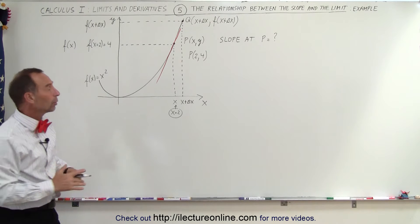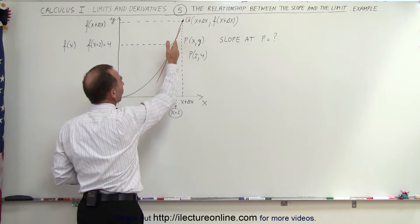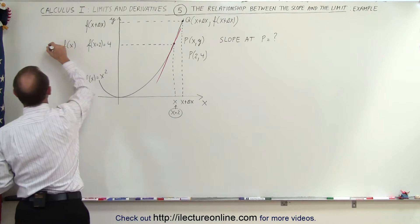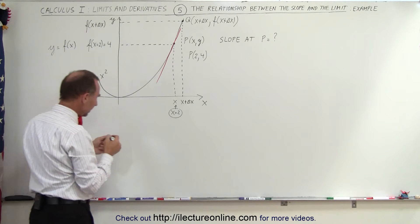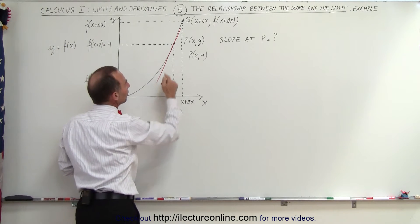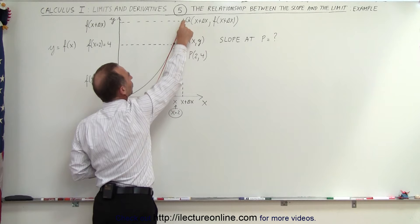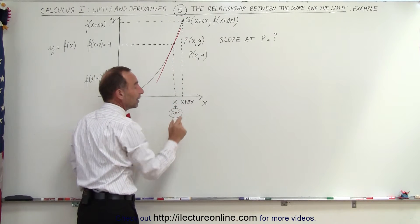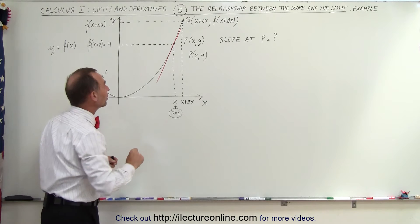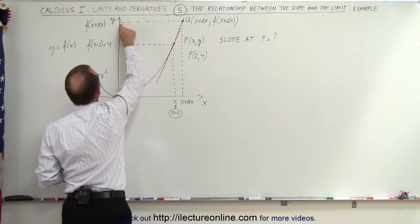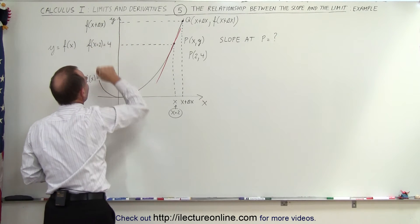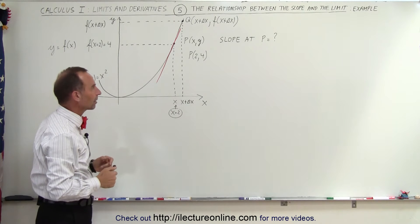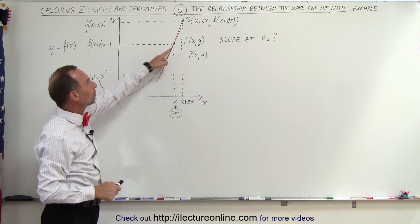In general, we're going to call the x coordinate x and the y coordinate y, so y equals f of x. Then we're going to pick a point a little bit further along the function called Q, so the x coordinate of Q will be x plus delta x, delta x being a very small value, and then the y value for that point will be f of x plus delta x — the function evaluated at the new x coordinate.